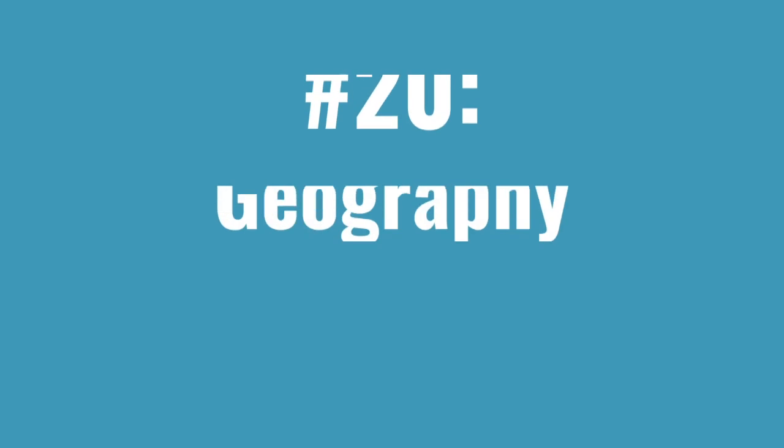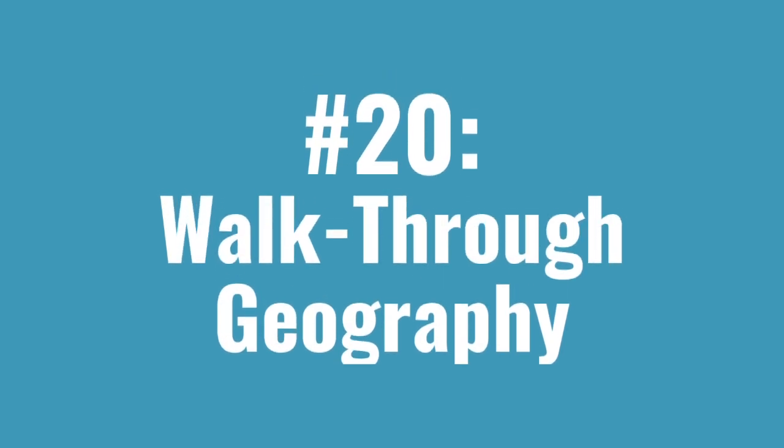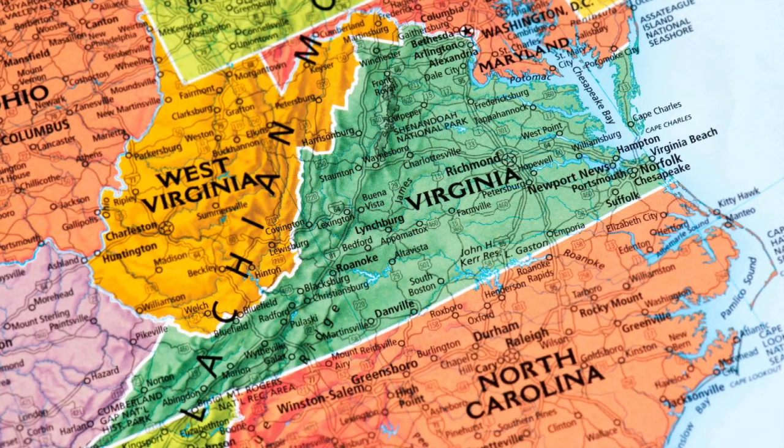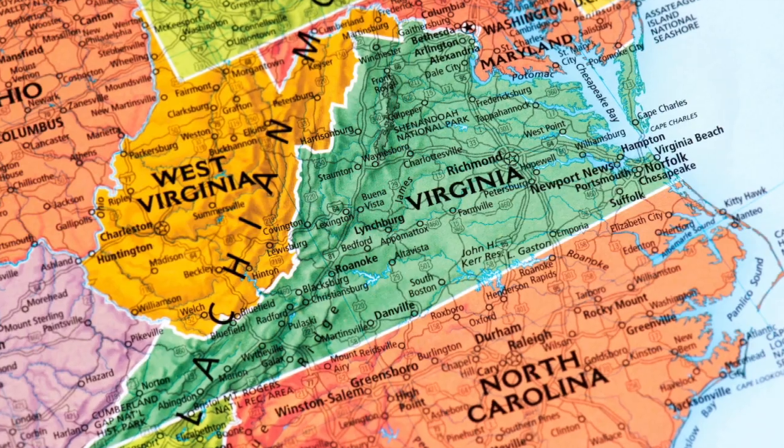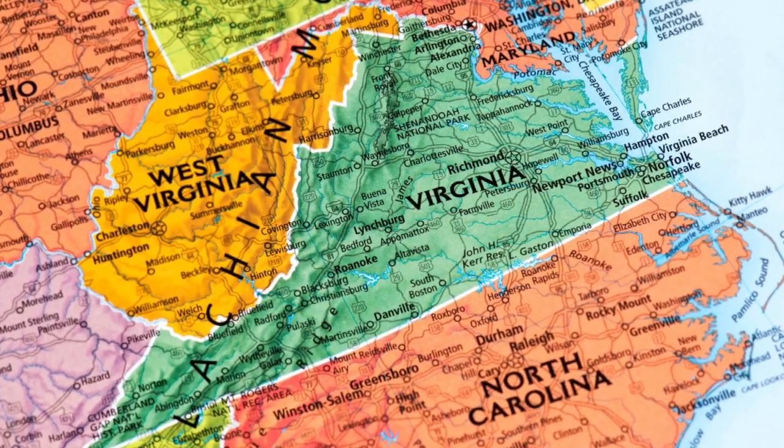Today we're going to talk about walkthrough geography, or sometimes I call it room-sized maps. We're going to make a giant map of Virginia using an entire room, so that when you walk across the room, you've walked across Virginia. You could obviously do this with any state.